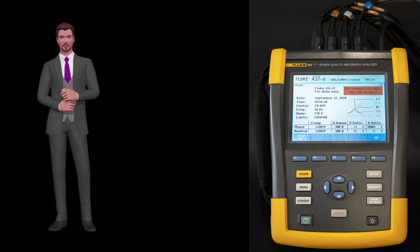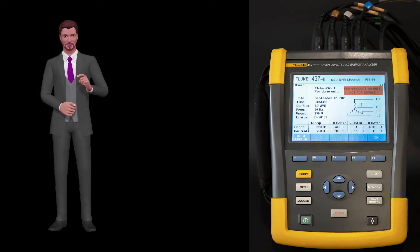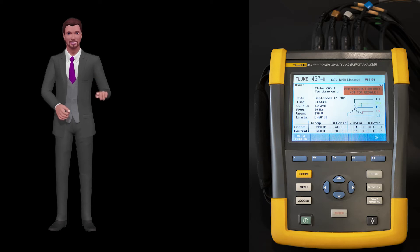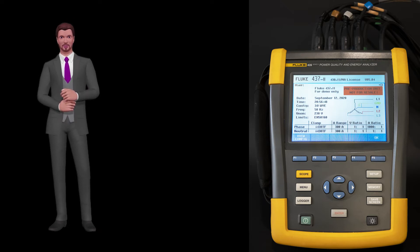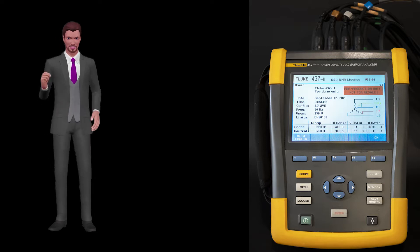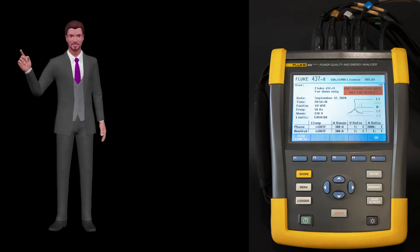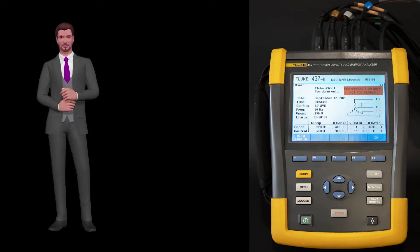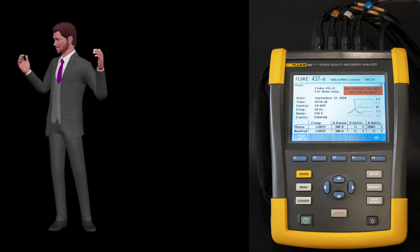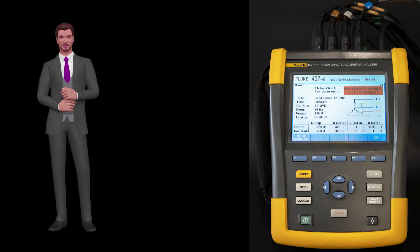In my previous video about the Power Quality Analyzer Fluke 435 Series 2 we reviewed all the measurement functions that the analyzer provides through the menu key, so by now you will have noticed that this analyzer is very powerful and versatile. But before we get down to work and install the equipment in an electrical panel, we have to see how to properly configure the analyzer.